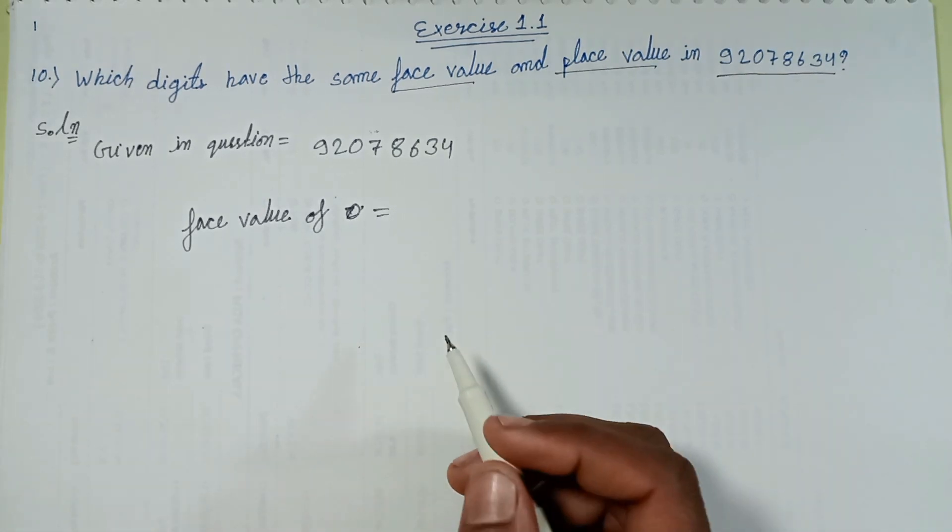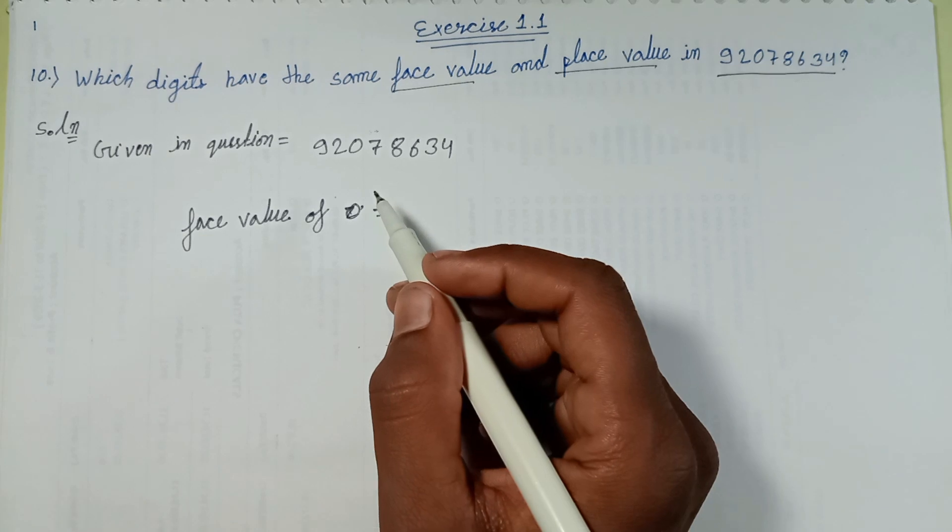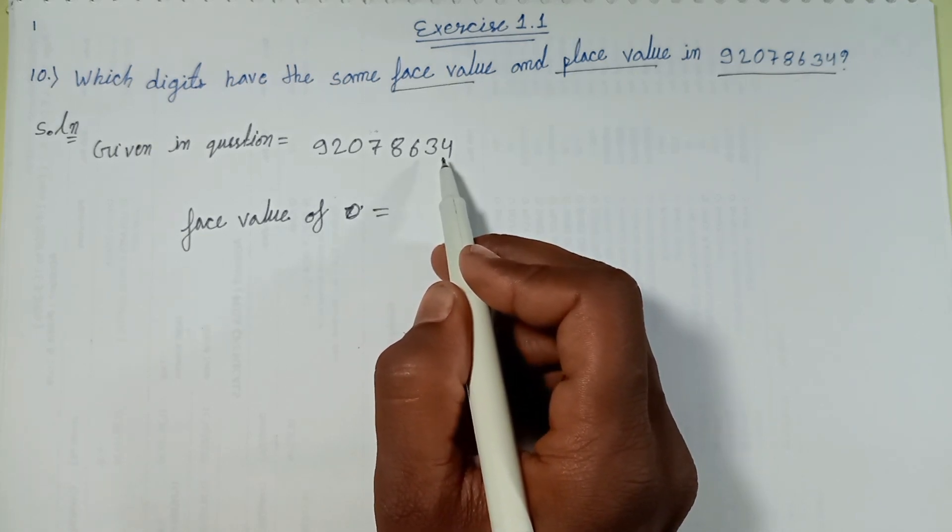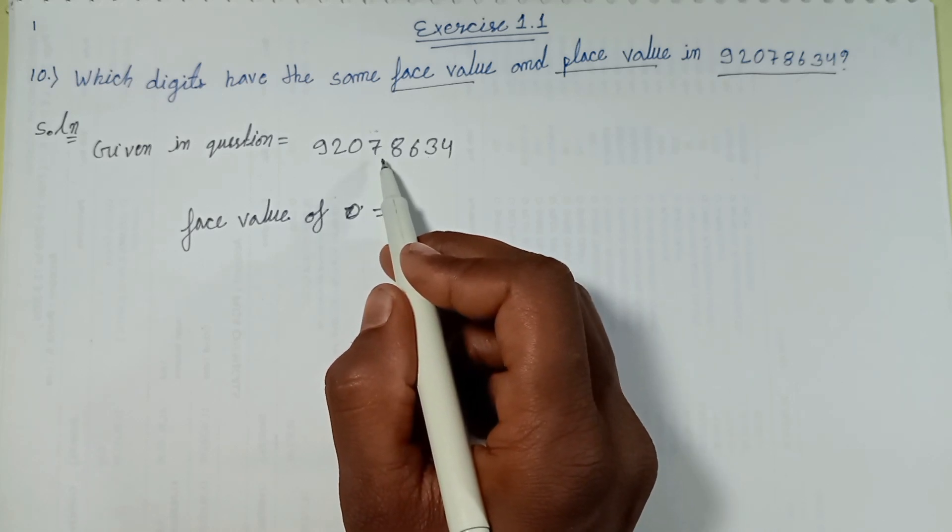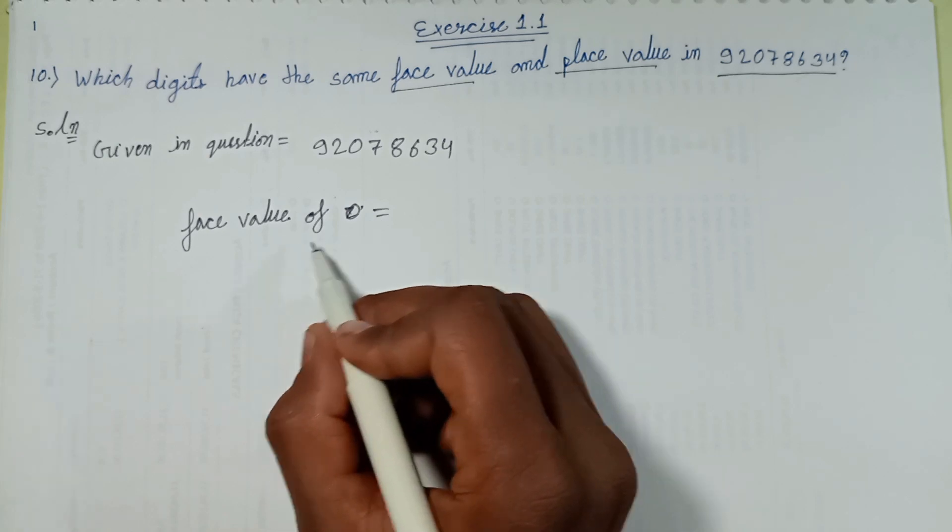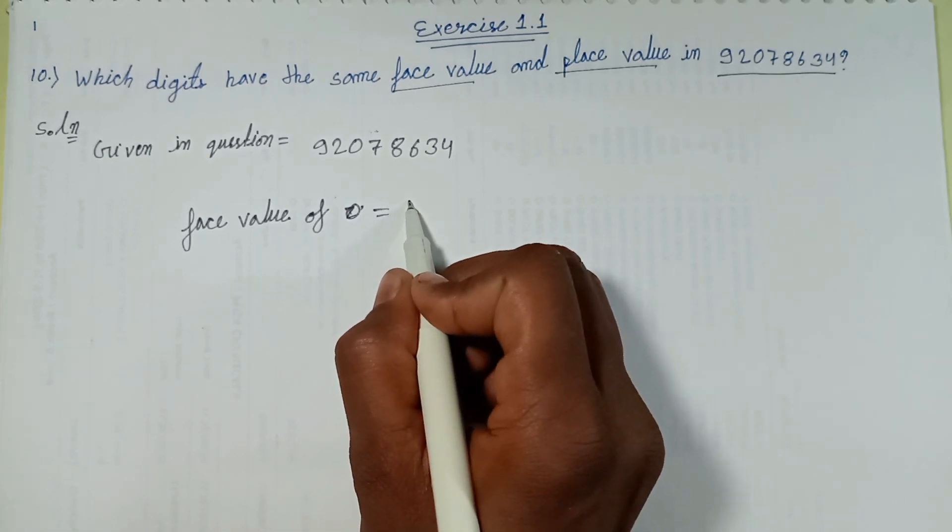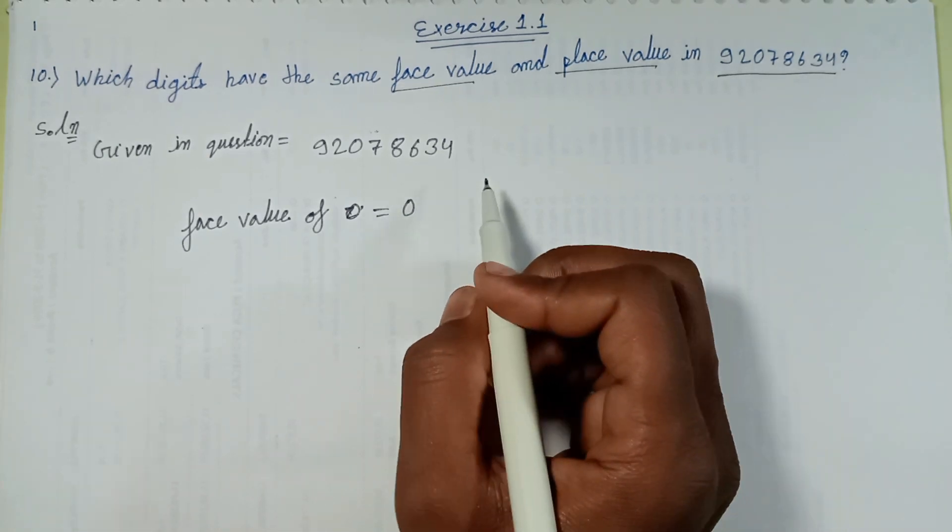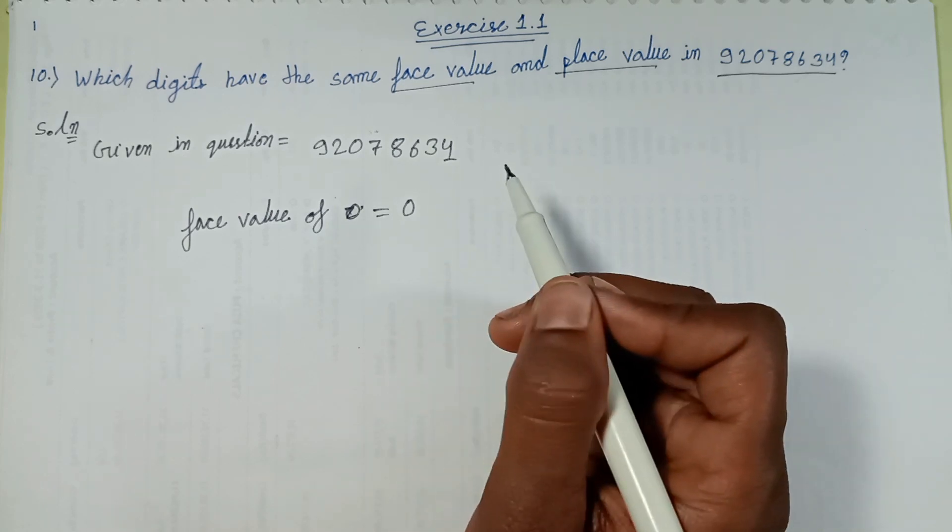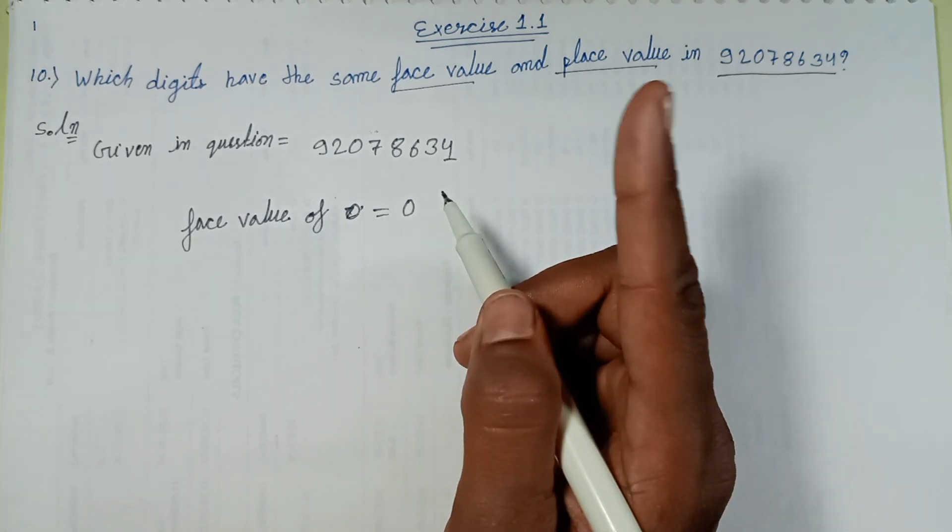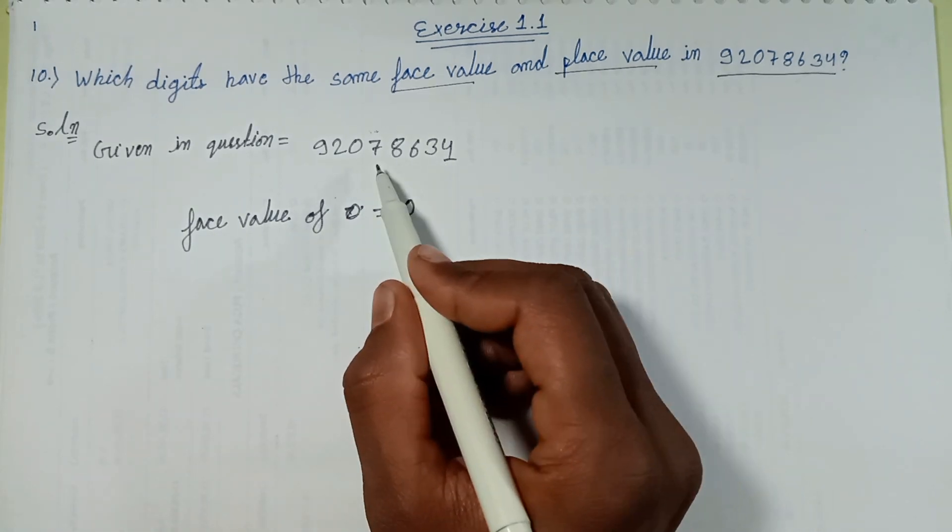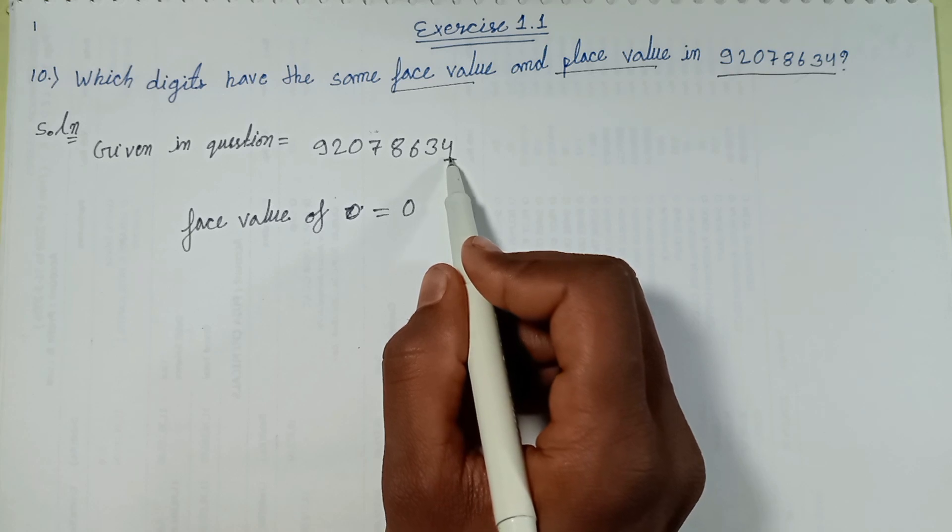Any number's face value is itself. Face value of four is four, face value of seven is seven. Face value of zero is equal to zero. Next, place value of four is one, and place value of zero once ten, hundred, thousand, ten thousand, lakh, lakh place.